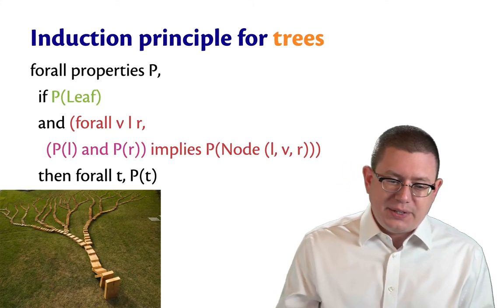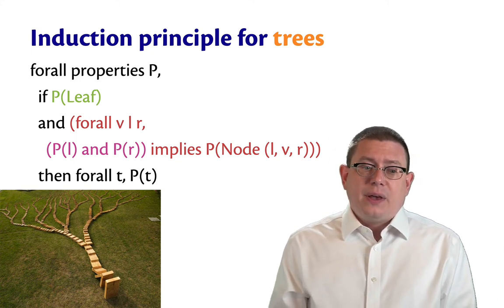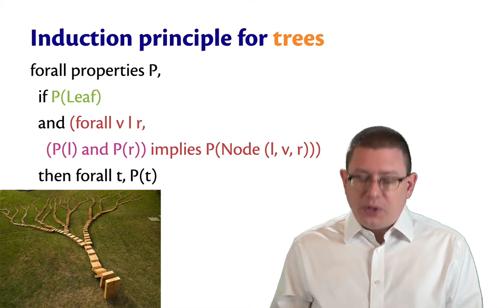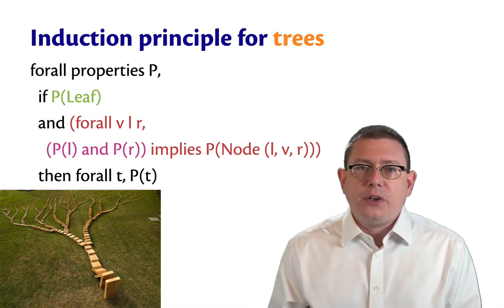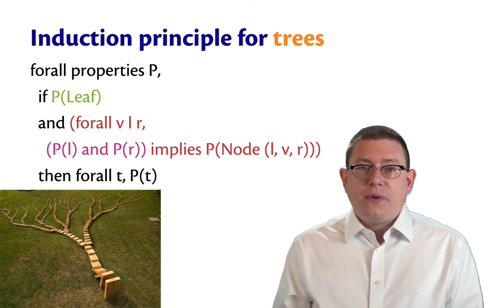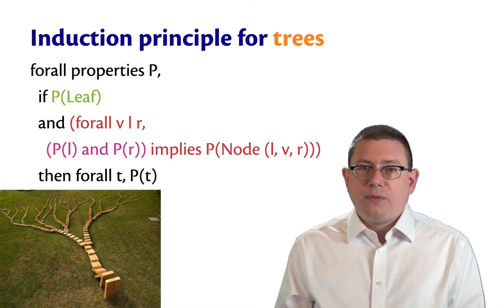Now finally, what about trees? This gets a little more complicated, but it's really kind of the same. If P holds of a leaf, and if for all ways of building up the components of a node, so a value, a left subtree, and a right subtree, if you know that P holds of L and P holds of R, then that implies P holding of that bigger node than P holds of all trees.